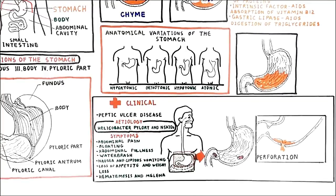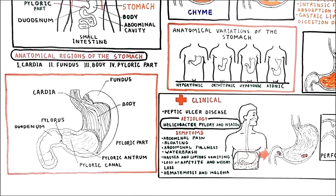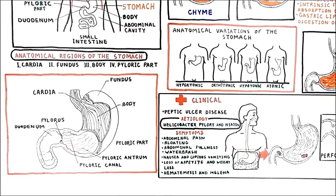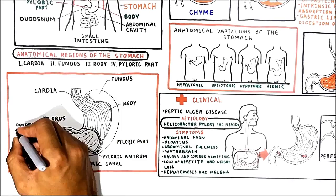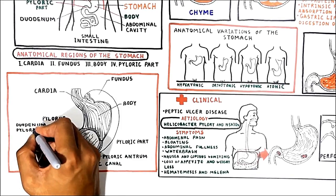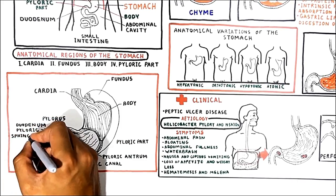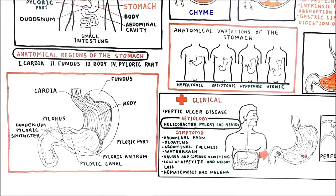It is very important to know that the pylorus communicates with the duodenum of the small intestine via a smooth muscle sphincter called the pyloric sphincter. The sphincter helps control when food can move into the duodenum, the first part of the small intestine.